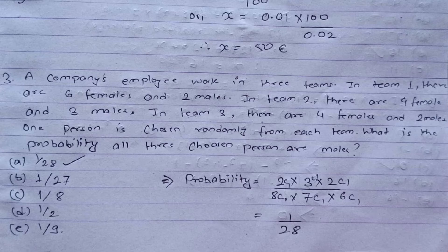Question three: a company's employees work in three teams. In team one there are six females and two males; in team two there are four females and three males; in team three there are four females and two males. One person is chosen randomly from each team. What is the probability that all three chosen persons are male? The probability is calculated as (2C1 × 3C1 × 2C1) / (8C1 × 7C1 × 6C1), giving the answer 1/28. The correct answer is option A.